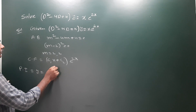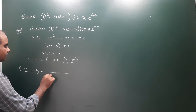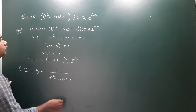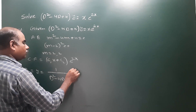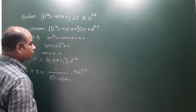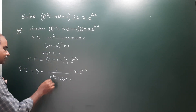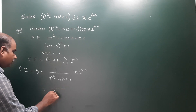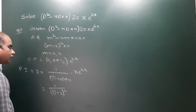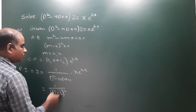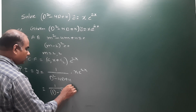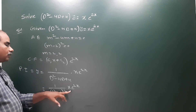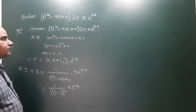Next, the particular integral. The particular integral is y_P = [1/(D² - 4D + 4)] · x·e^(2x). And D² - 4D + 4 can be written as (D - 2)², since it is a perfect square. So y_P = [1/(D - 2)²] · x·e^(2x).